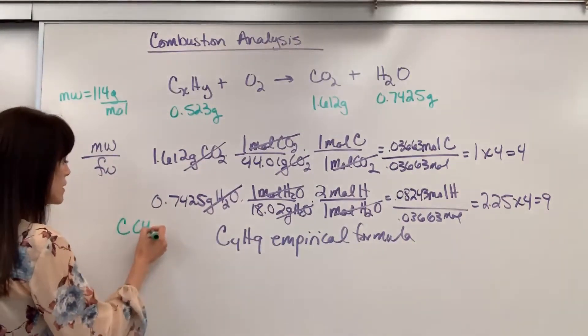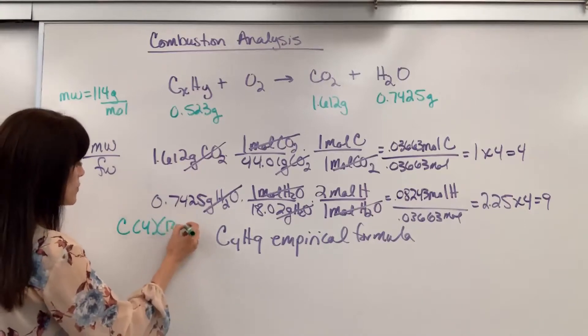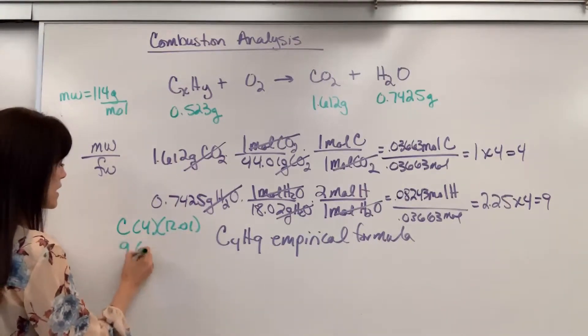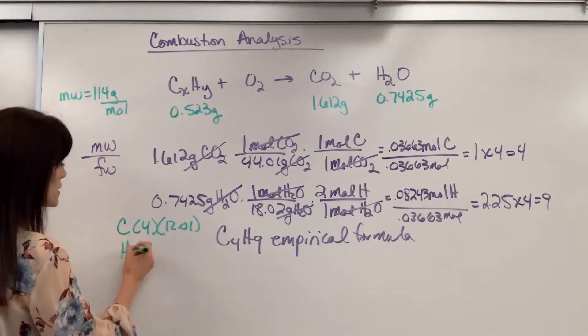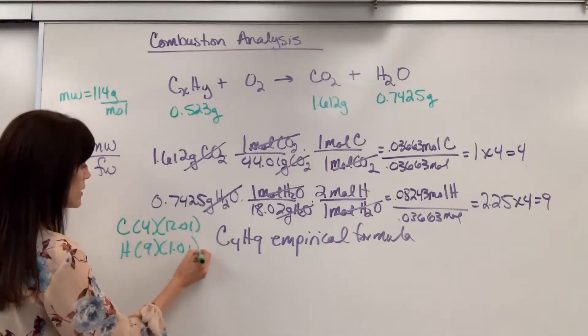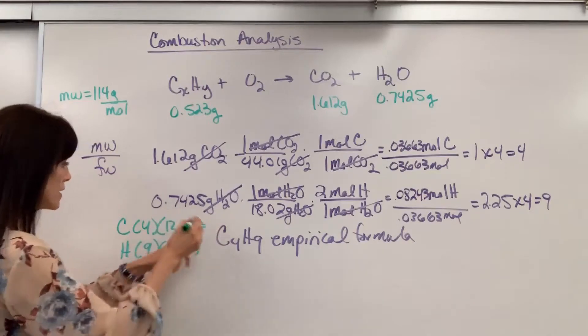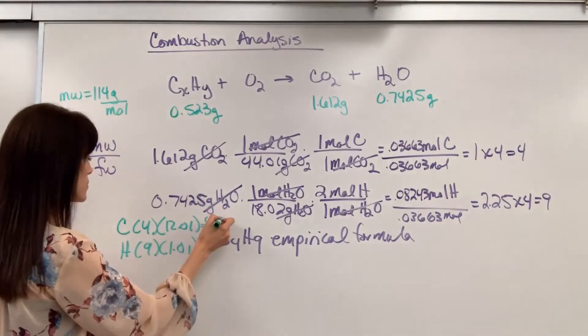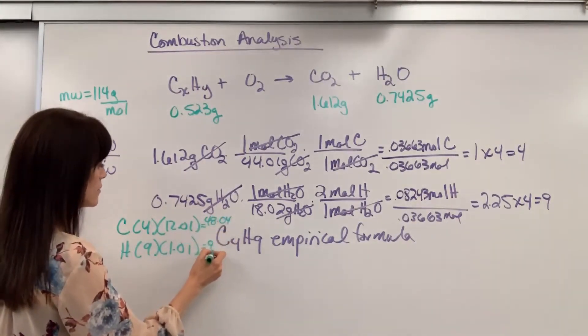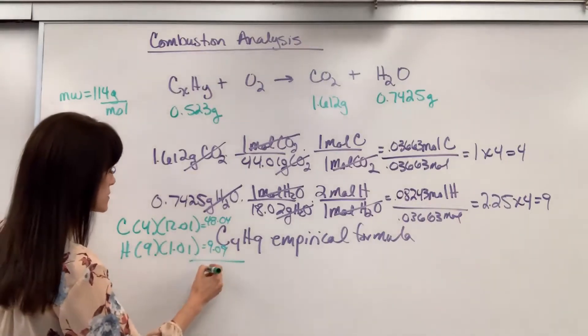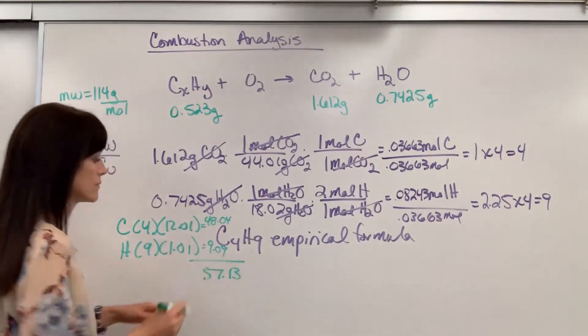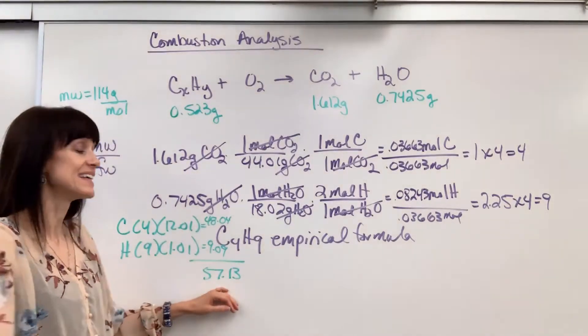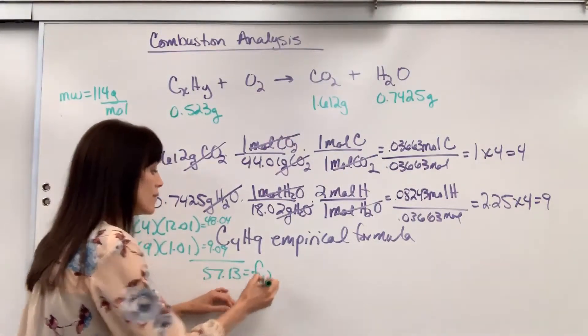So I've got four carbons, that's 12.01, and we've got nine hydrogens, that's 1.01. This will give us 48.04, 9.09, so that's 57.13. 57.13 is the formula weight.